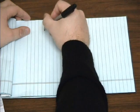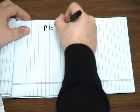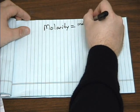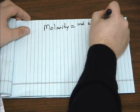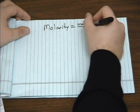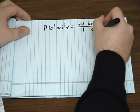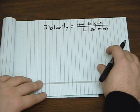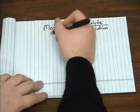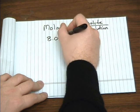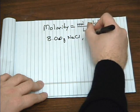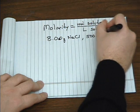The most common concentration unit for a chemist, however, is the molarity unit. Molarity is defined as moles of solute, or the thing that you're dissolving, over the liters of solution. For example, if you have 8 grams of sodium chloride in a 500 milliliter solution.